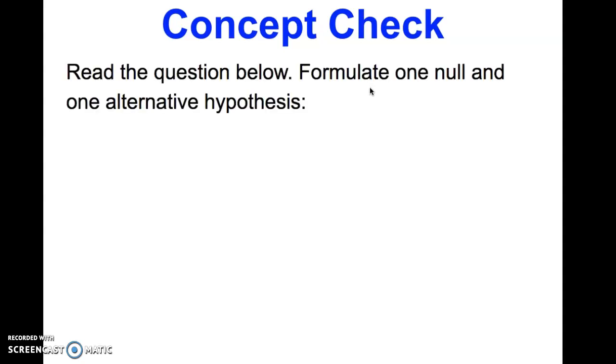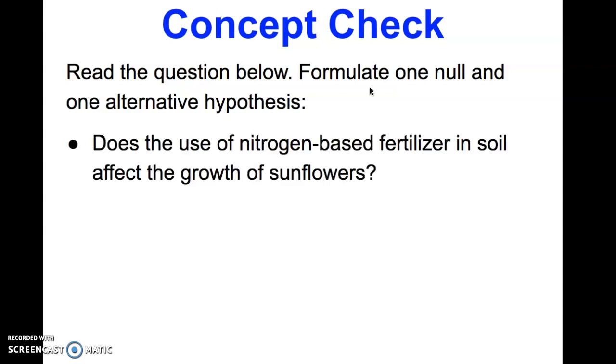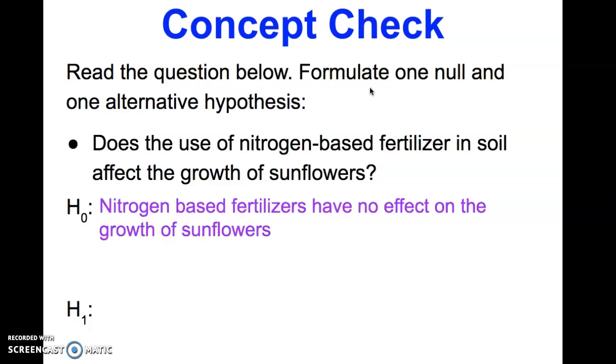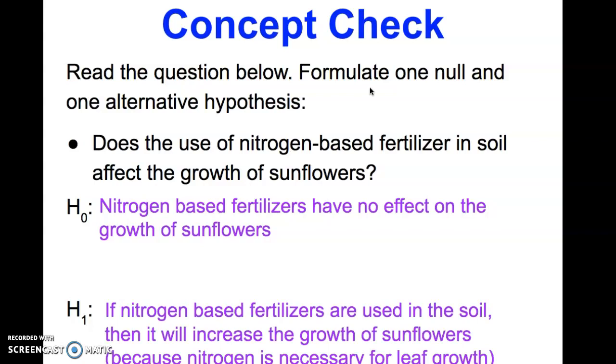Let's take a look at writing some of these null and alternative hypotheses. Read the question below and formulate one null and one alternative hypothesis: Does the use of nitrogen-based fertilizer in soil affect the growth of sunflowers? A great null hypothesis would be: Nitrogen-based fertilizers have no effect on the growth of sunflowers. An alternative hypothesis would read something like: If nitrogen-based fertilizers are used in the soil, then it will increase the growth of sunflowers because nitrogen is necessary for leaf growth. So there's our because statement.